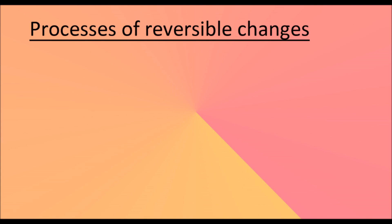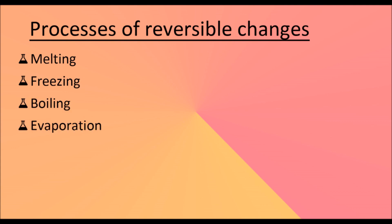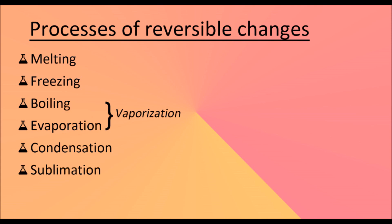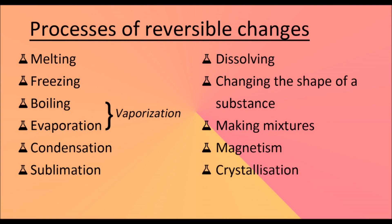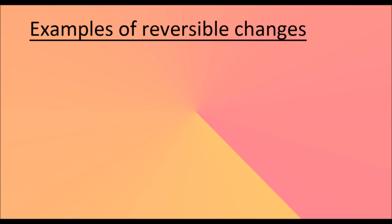Processes of reversible changes include: melting, freezing, boiling, evaporation (boiling and evaporation are the two types of vaporization), condensation, sublimation, dissolving, changing the shape of a substance, making mixtures, magnetism, and crystallization.